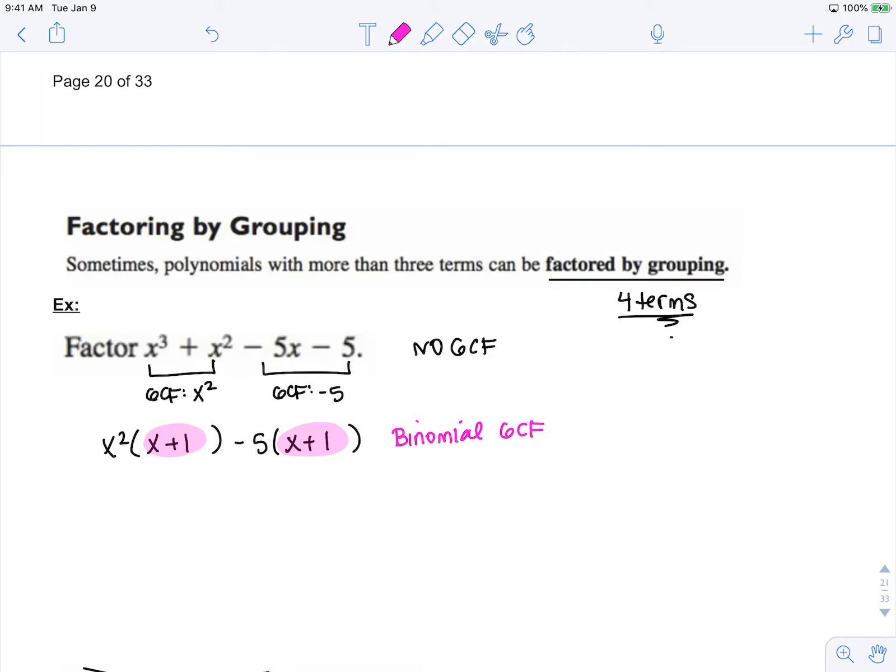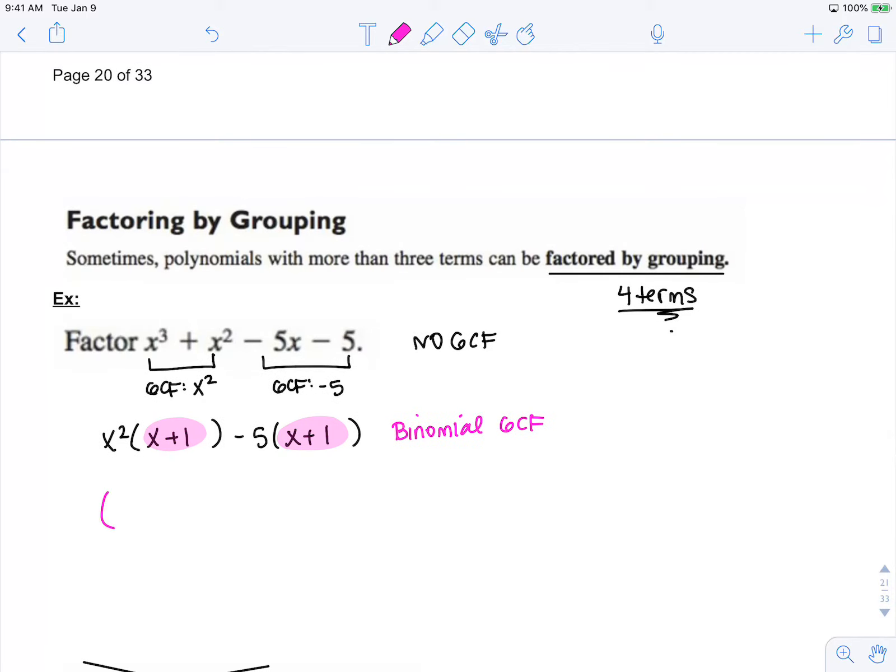Binomial GCF. If I factor out that binomial GCF, what's going to be left over is the original GCFs of my two groups. And this would be my factored polynomial with four terms.